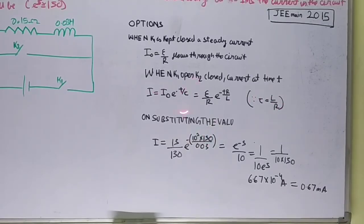So the equation can be rewritten using this value as EMF by R times e to the minus TR by L, where this R and L came from tau equals L by R. Now substituting the value, we get 15 by 150 times e to power minus 10 to the 3 times 150 by 0.038, which ultimately gives us 1 upon 10 by 5, which gives us 0.67 mA.